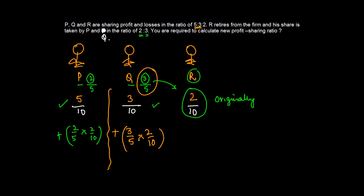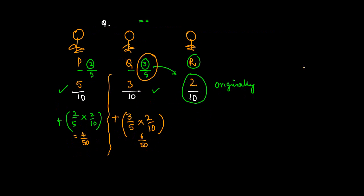Let me just draw a small line over here. In other words, this becomes 4 by 50, and this becomes 6 by 50. So if we see P on a standalone basis, P will get how much he originally had: 5 by 10, plus he gets 4 by 50 from R.